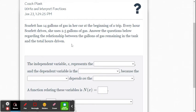So time here is going to be our independent quantity, and the number of gallons left in the tank is going to be our dependent quantity. It depends on the amount of time the car has been operating.